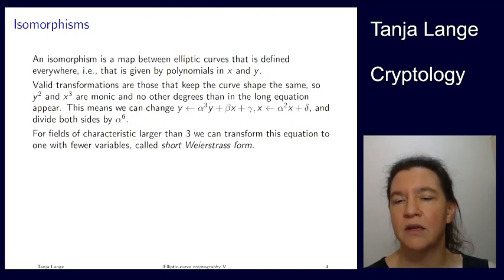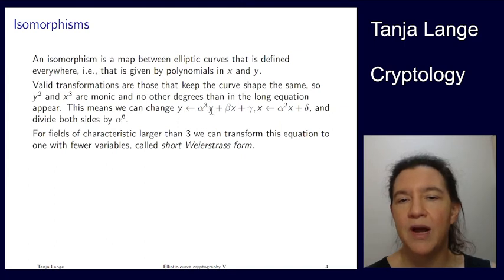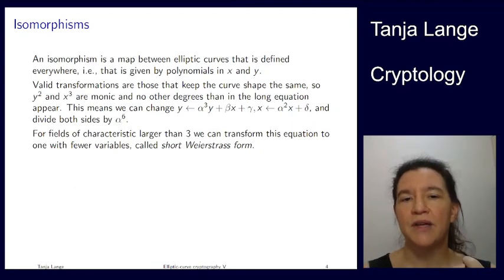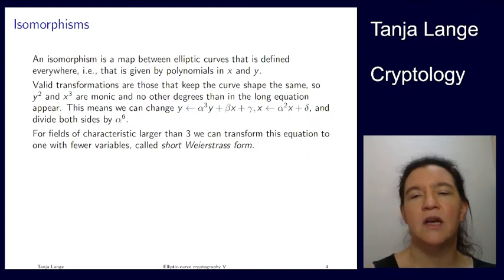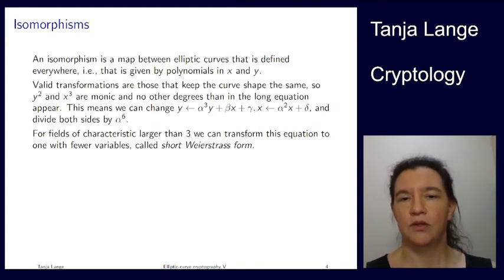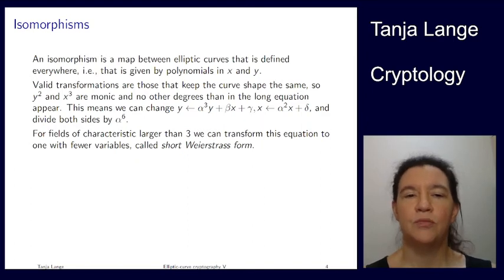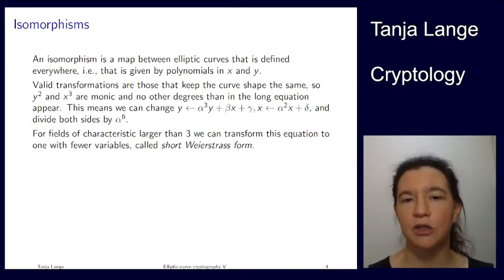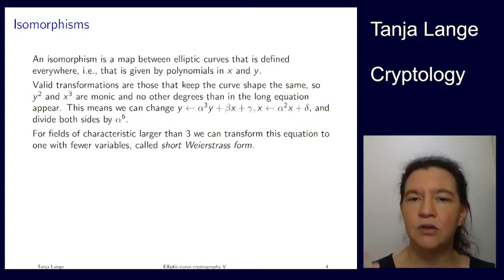So what I'm allowed to do is doing linear changes of variables where the y can change including an x, and the x cannot change including y. So for the x I can only do a multiple of x and then some constant term. For the y I can do a multiple of y, multiple of x and some constant term. I need to ensure that I'm getting again coefficient one in front of the y squared and in front of the x cubed.